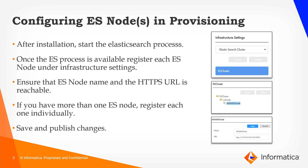The URL you need to provide here is the HTTPS URL for the Elasticsearch server port, which defaults to 9200. You have to ensure that the Elasticsearch node and the HTTP URL are both accessible. If you have more than one ES node, you have to register each and every node individually under the Elasticsearch cluster in the provisioning tool. Once you do this, you have to save and publish your changes.